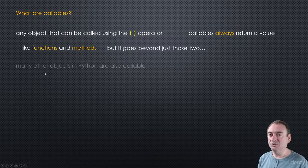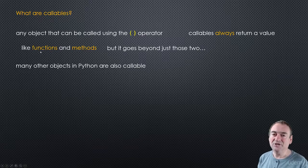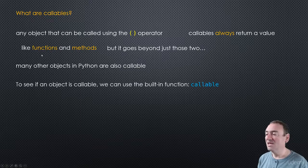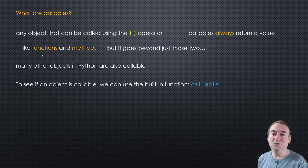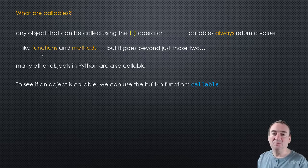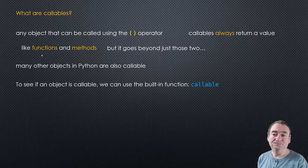But it goes beyond just those two. There are a lot of objects in Python that are callable that are not technically functions and methods. To see if an object is callable, we can use the built-in function called callable. You pass in an object and it will tell you whether that object is callable or not - whether you can apply the call operation using the parentheses. If it's true, it will tell you you can do so, and of course it will always return a value.